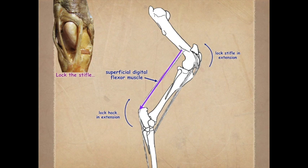One important thing about the reciprocal apparatus in the horse is that when we have femoral nerve damage — recall that the femoral nerve innervates the quadriceps femoris muscle, which extends the stifle — if we are unable to extend the stifle, then we are unable to extend the hock, and therefore the whole hind limb will collapse. We will see that in the bovine they still have some ability to extend the hock even if they've lost the ability to extend the stifle.